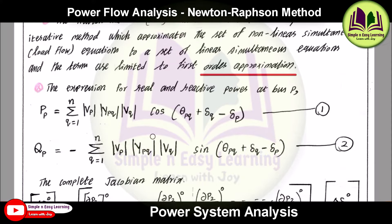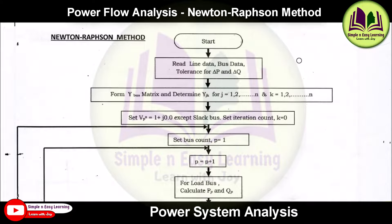The expressions for real power and reactive power are given as: Pp = summation (q=1 to n) of Vp * Ypq * Vq * cos(theta_pq + delta_q - delta_p), and similarly for Qp. You need to read line data, bus data, and the tolerance values for delta_P and delta_Q — that is, the change in real power and change in reactive power.